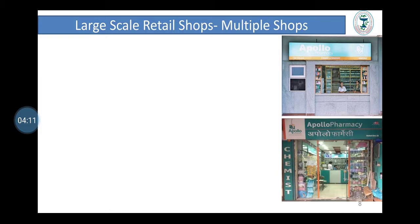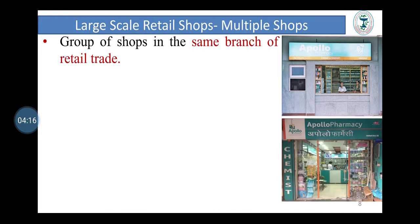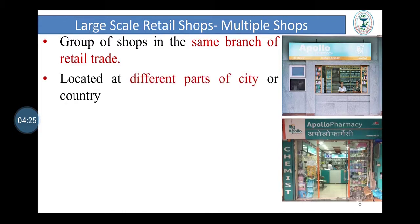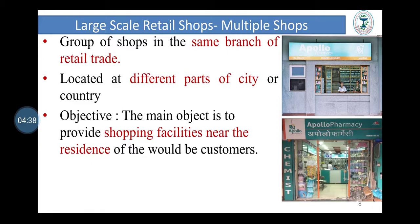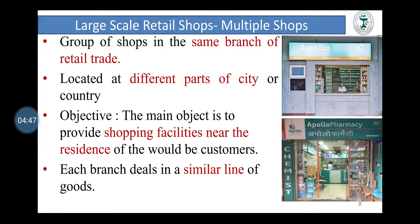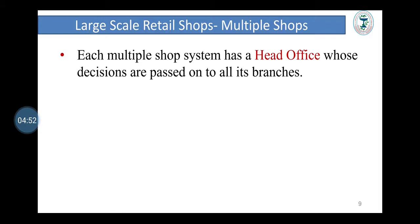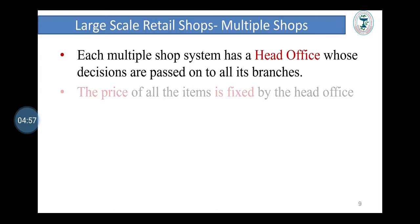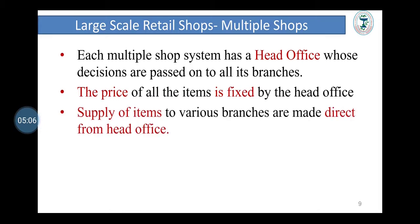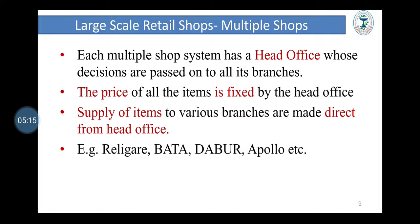The second type is multiple shop or chain store. Multiple shops or chain stores are groups of shops in the same branch of retail trade. A single business firm opens a number of branches situated at different localities in the city or different parts of the country. The main objective is to provide shopping facilities near the residence of customers. Each branch deals in a similar line of goods, with prices fixed by the head office. Examples include Rally Gear, Bata, Dabur, Apollo, etc.